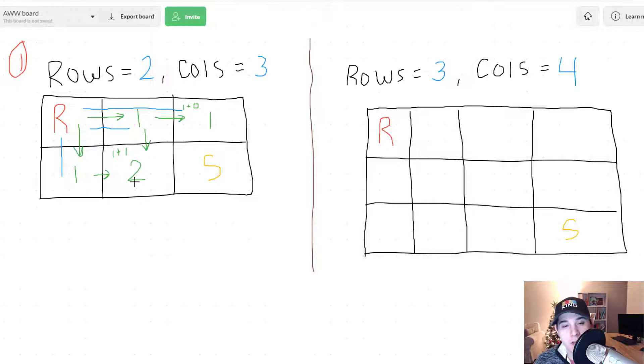And then for this box right here where we have a sum of two we could go this way or we could go this way. So you're just always looking above you and to the left of you.